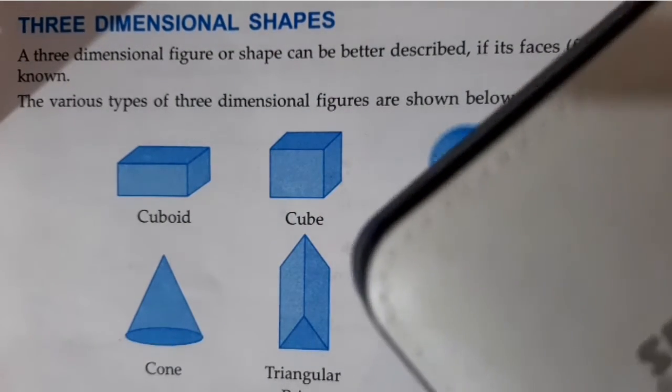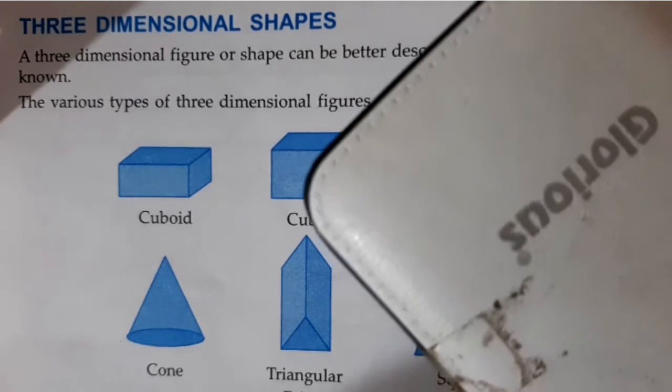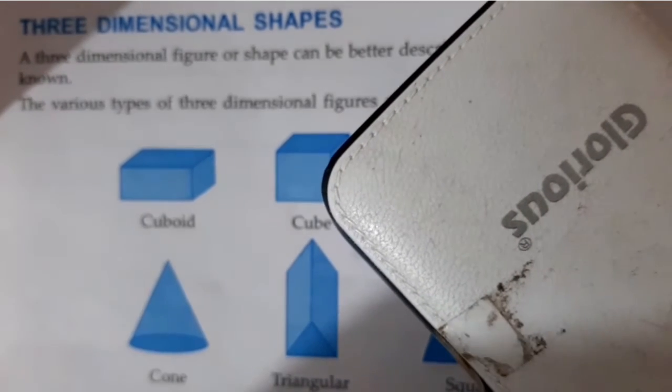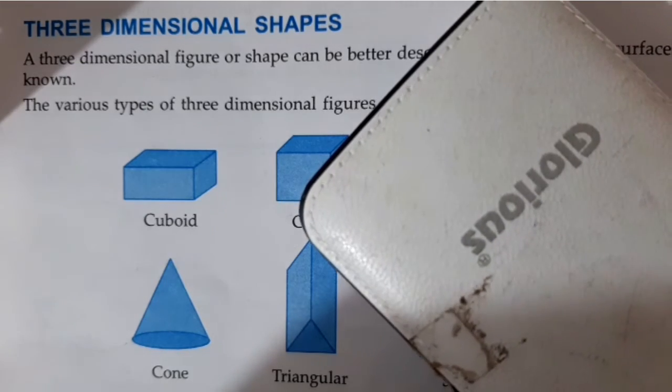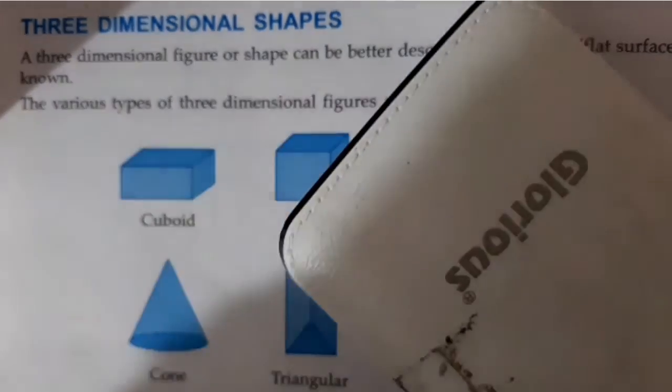So a cuboid has 12 edges, 8 vertices and then faces. It has two, faces are of two types. One is plain face and one is curved face. Plain faces means these faces.